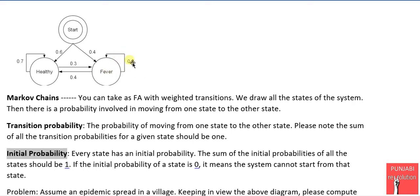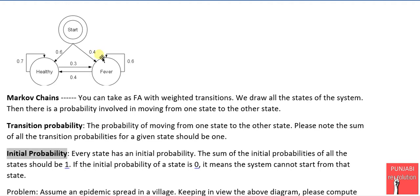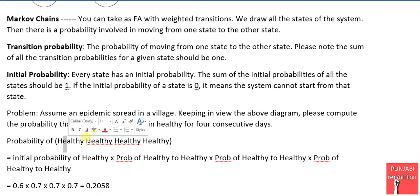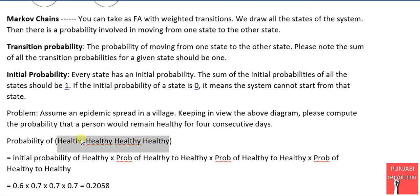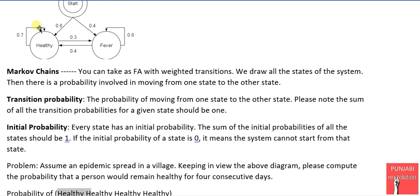To further illustrate this concept, let's do some examples. Assume an epidemic spread in a village. We want to compute the probability of a person being healthy on the first day, second day, third day, and fourth day. We start with the initial probability of being healthy, which is 0.6. Then the healthy-to-healthy transition probability is 0.7 for each subsequent day.